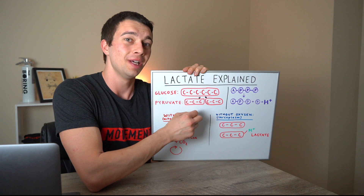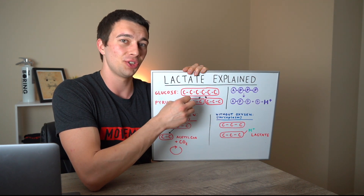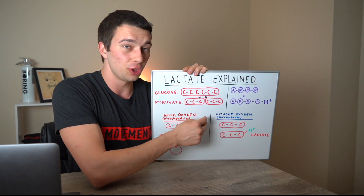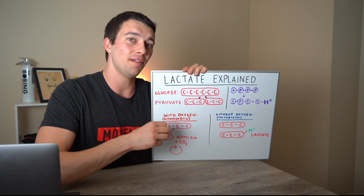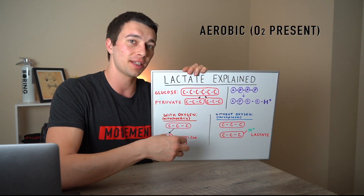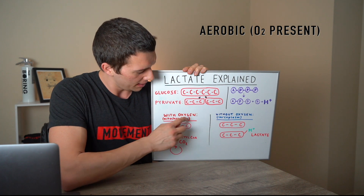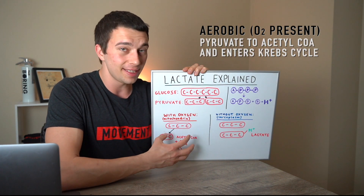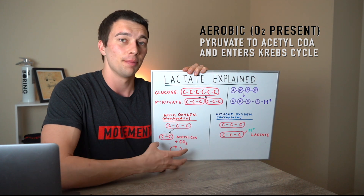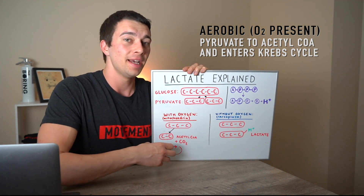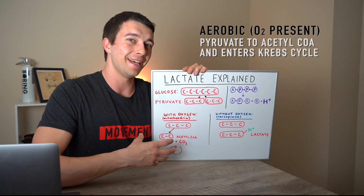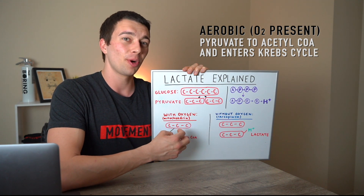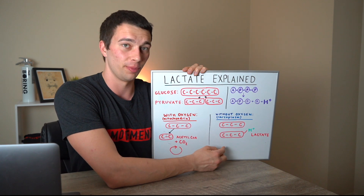Once we have that pyruvate molecule, depending on whether there's oxygen available to metabolize it, it's going to go down one of two different pathways. If there's enough room in the mitochondria and oxygen, that pyruvate is going to be broken down into acetyl-CoA and then enter the Krebs cycle, and we're going to get a lot of ATP through aerobic processing. This is the aerobic pathway that's always going on, but when working out really hard we're going to max out this aerobic pathway and rely more on the anaerobic pathway.